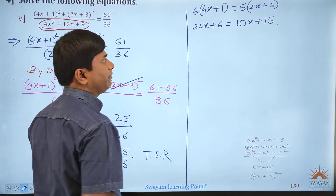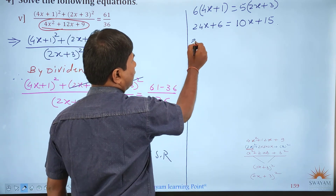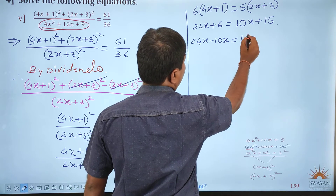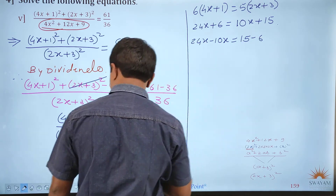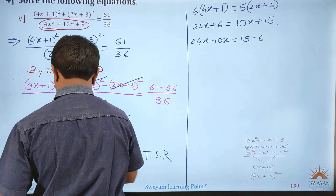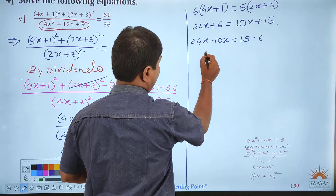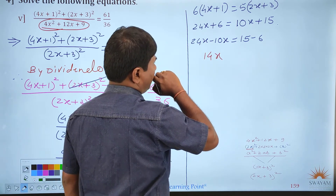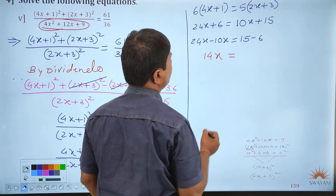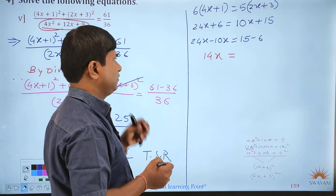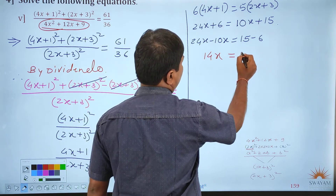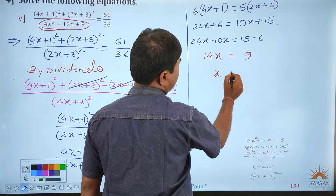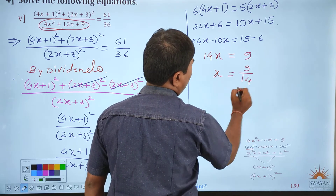So the calculation: 5 times 2x is 10x and 5 times 3 is 15. Then 24x minus 10x is equal to 15 minus 6, giving us 14x equal to 9. Therefore x is equal to 9/14.